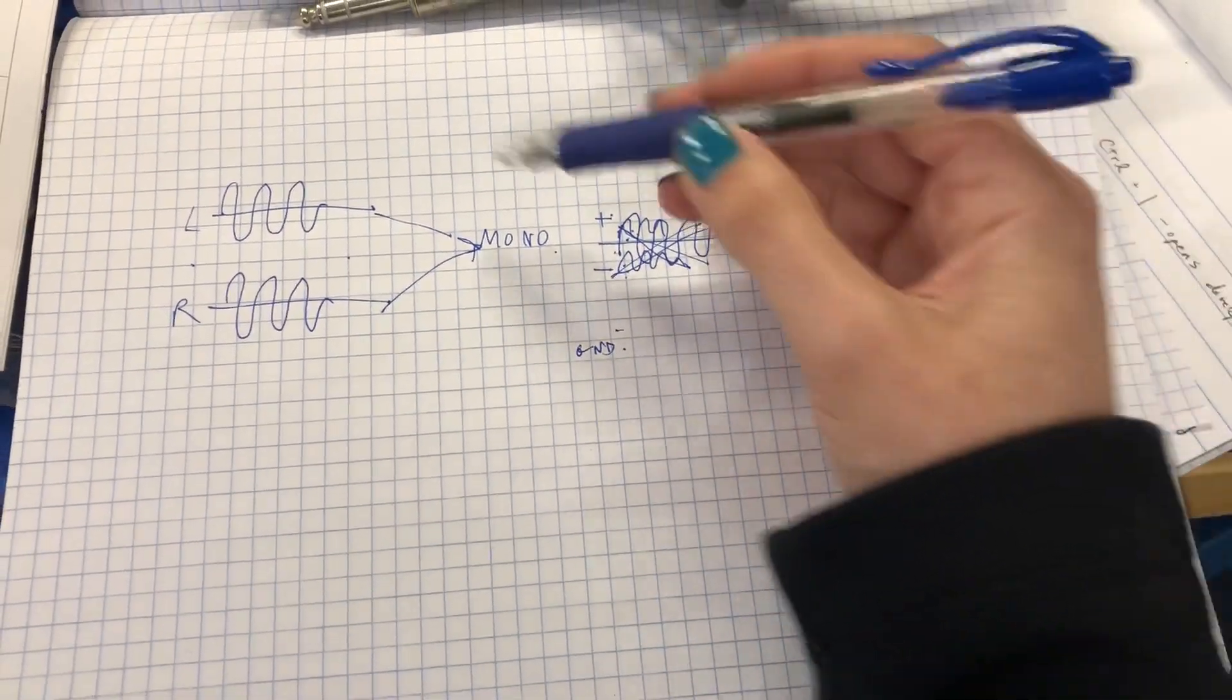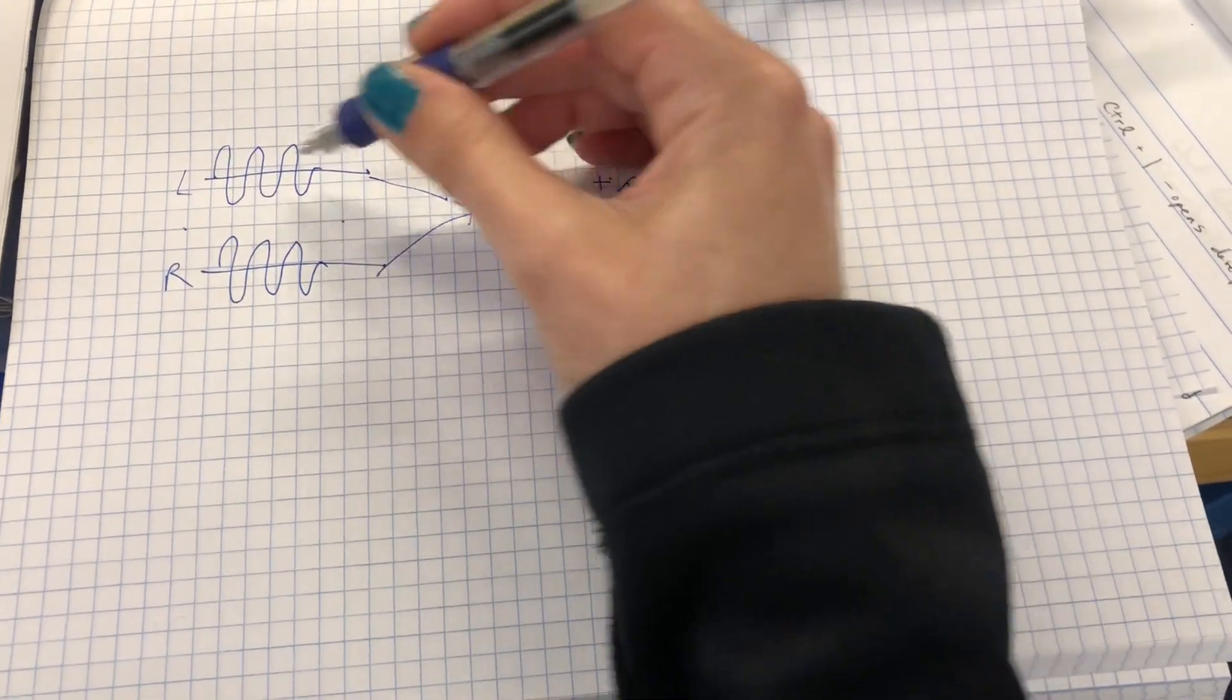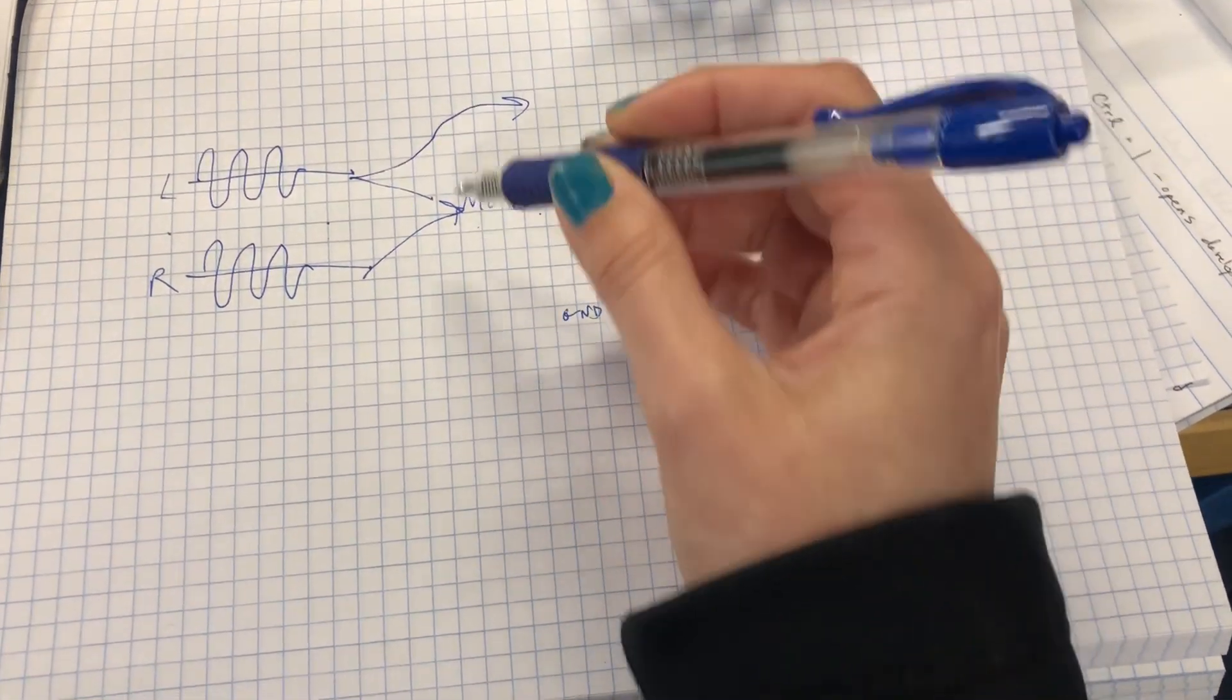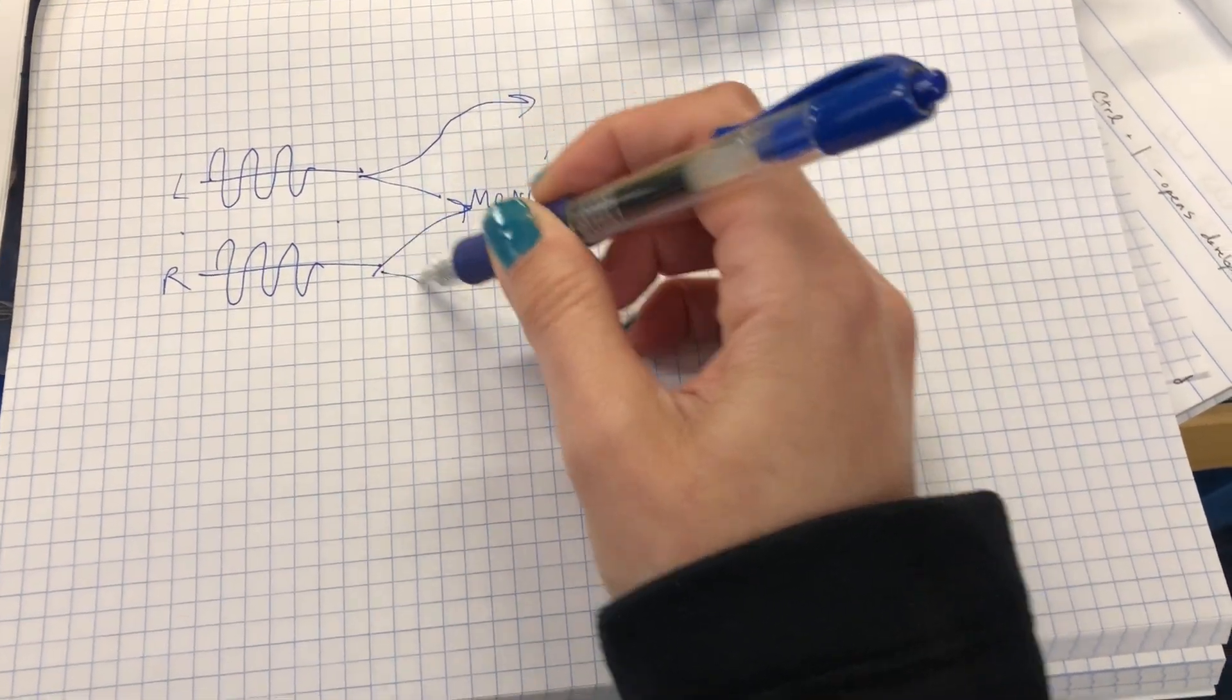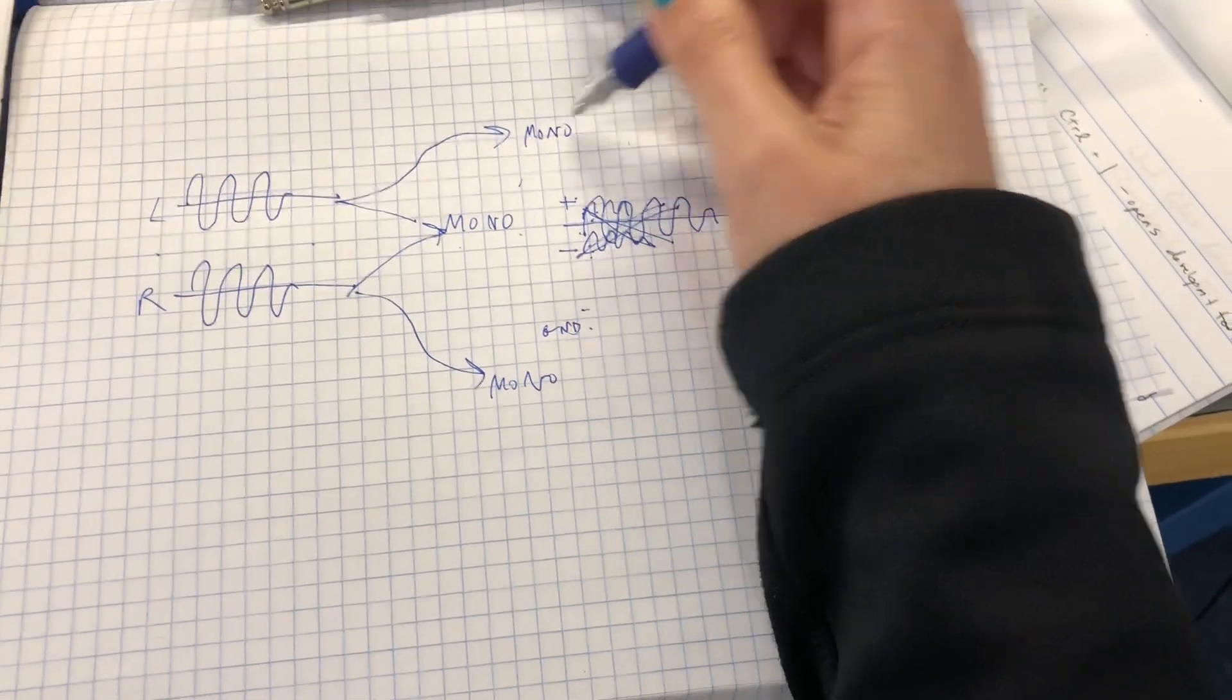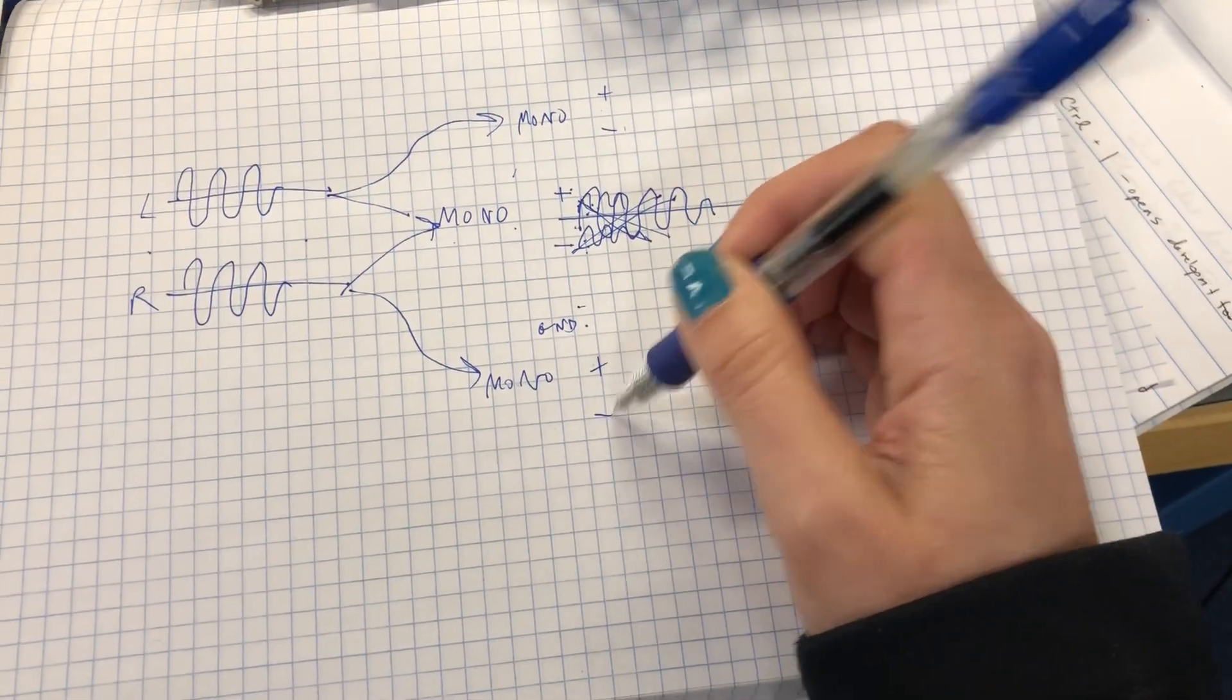So what we want to do instead is make a breakout cable, or have one available. You would take your left channel and run that into its own mono channel. Take the right channel, run that into its own mono channel. So you have your positive negative here, and you have your positive negative here.